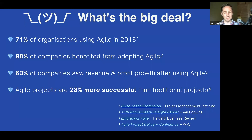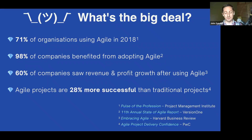What's the big deal about agile? 71% of organizations were using it as of 2018. 98% of companies who tried it said they benefited from adopting agile. 60% of those companies saw revenue and profit growth after using it. And agile projects, as measured by PwC, are 28% more successful than traditional projects. These slides will be made available — I'll tweet them out after this talk, and they're all linked and sourced so you can dig into these stats.